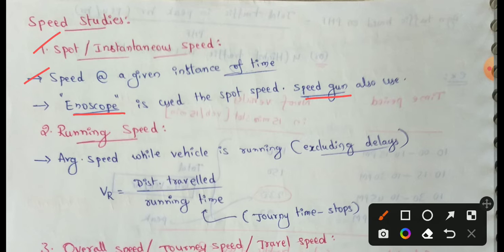The enoscope method is also called the mirror box method. In this method, mirrors are set at 45 degrees. The enoscope is kept at 50 meters from the observer.